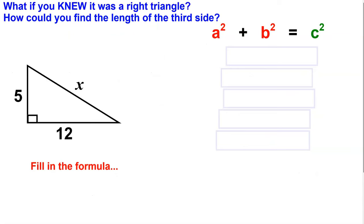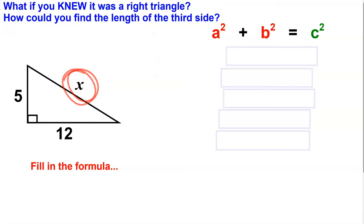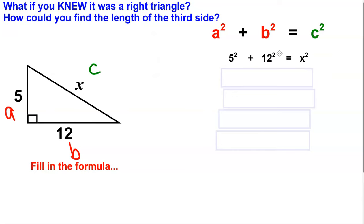Let's take a look at this triangle. If we already knew it was a right triangle because of the right angle box in the corner, how could we find the length of the missing side? First, identify whether you know the legs or the hypotenuse. Once you identify A, B, and C, substitute them into the equation. In this equation, the hypotenuse is missing, so we leave it as a variable — you can use C or X if that's what's indicated in the drawing.